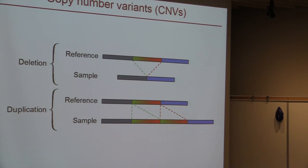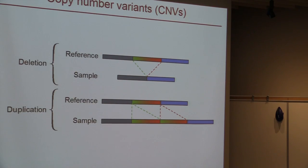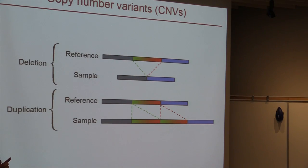There are many different kinds of genetic variants, such as single nucleotide variants, which are substitutions of one nucleotide for another. But the kind we're interested in for this talk is copy number variants. Copy number variants include both deletions and duplications, and are usually defined as those more than 1,000 base pairs in length. A deletion is a segment of DNA missing in your sample compared to the human reference genome, and a duplication is a duplicated segment relative to the reference genome.